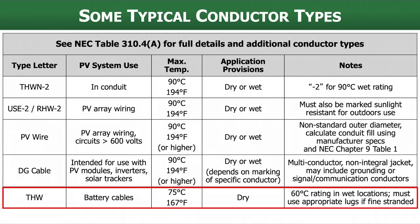Finally, there is THW. We use this for things like battery cables. The key contrast with the other conductor types is that it has a lower temperature rating — it's only 90°C in dry conditions, and in wet locations it drops to a 60°C insulation rating, which can become an issue. Probably we're not putting batteries in wet locations anyway, so that's typically fine. You must use appropriate lugs if the cable is finely stranded, as compared to the normal stranding we see in other conductor types. This is something you may run into when working with energy storage.